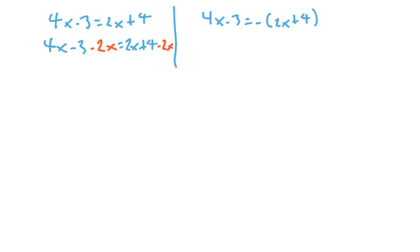4x minus 3 equals 2x plus 4. The other equation would be 4x minus 3 equals negative the quantity 2x plus 4. Let's solve them separately. On the left, we now have variables on both sides of the equation. We'd like to subtract 2x from both sides. That would mean the 2x's would add to 0 on the right. On the left, you could combine like terms. 2x minus 3 equals 4. Then add 3 to both sides, so 2x equals 7. Finally, x equals 7 halves. That would be one solution.